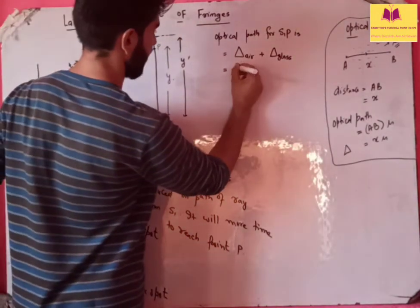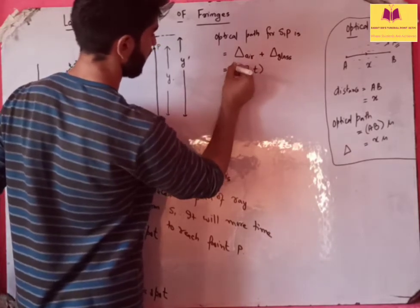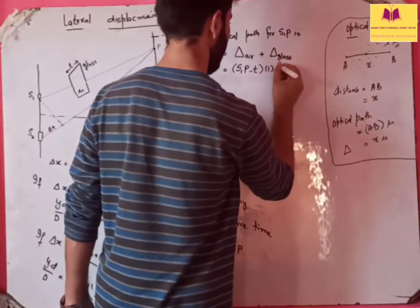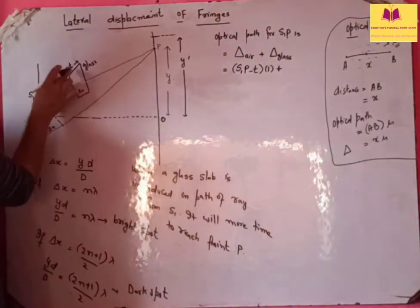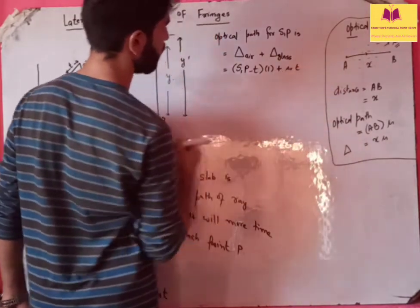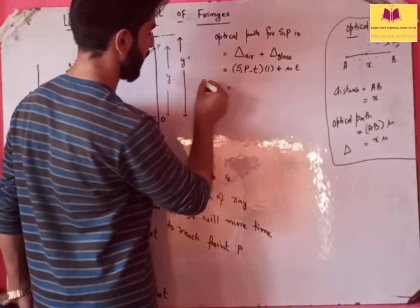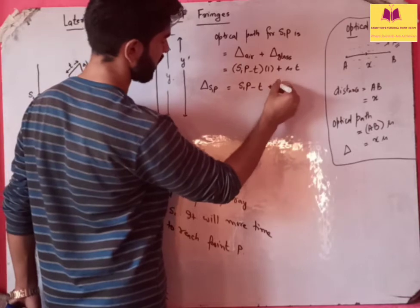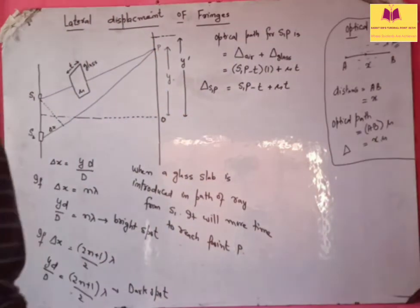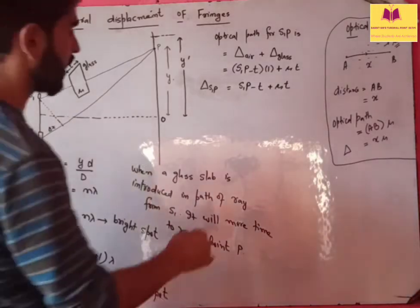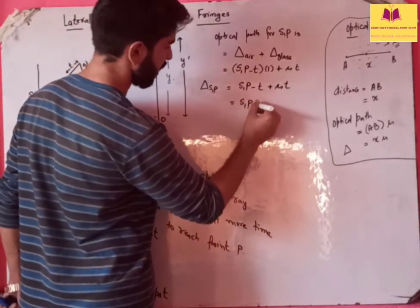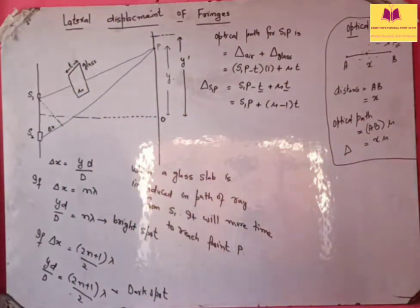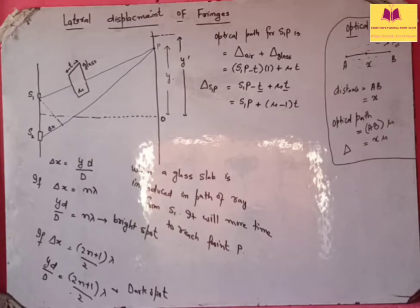The light ray S1P travels partly through the glass slab of thickness T and partly through air. In air, the path is S1P minus T, and air ka refractive index is 1. In glass, the distance traveled is T with refractive index mu. So the optical path for S1P is: (S1P − T)×1 + T×mu = S1P − T + mu·T = S1P + (mu − 1)·T. This is the optical path for the first light ray S1P.